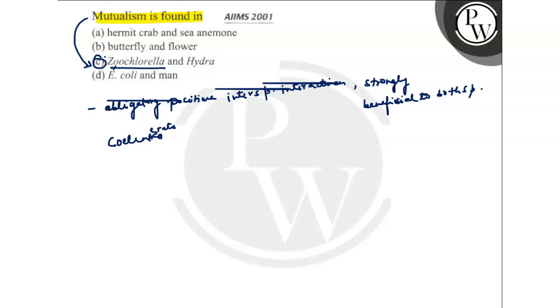What about the other options? Option A says hermit crab and sea anemone. This is a symbiotic relationship. The symbiotic relationship between hermit crab and sea anemone is a well-known example of mutualism in the sea. Many species of hermit crab carry symbiotic sea anemones on their chelipeds or the external surface of the shell they inhabit.